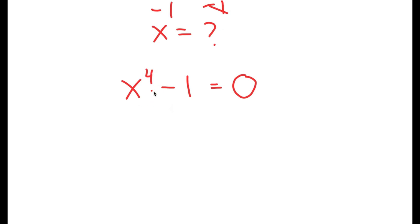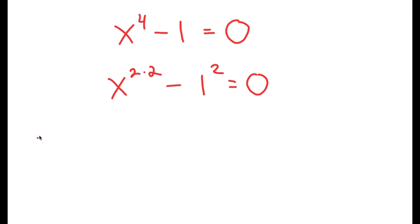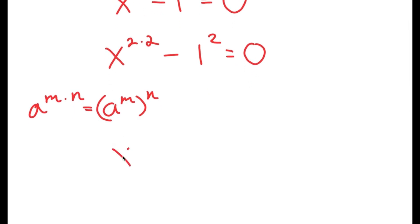From here, I'm going to rewrite this as x to the power of 2 times 2, minus 1 to the power of 2, is equal to 0. The reason I did this is because now I can use the property a to the power of m times n is equal to a to the power of m to the power of n. So x to the power of 2 times 2 is equal to x squared to the power of 2. So I have x squared to the power of 2, minus 1 to the power of 2, equals 0.